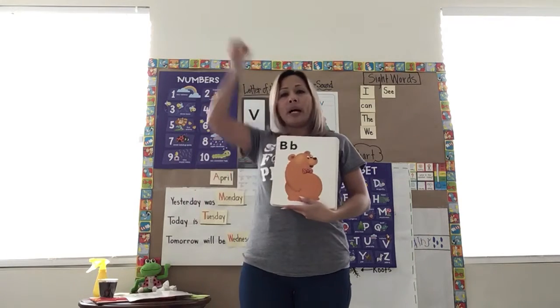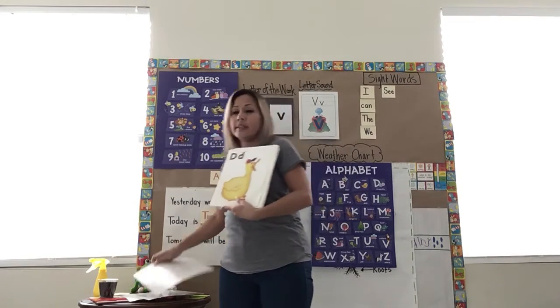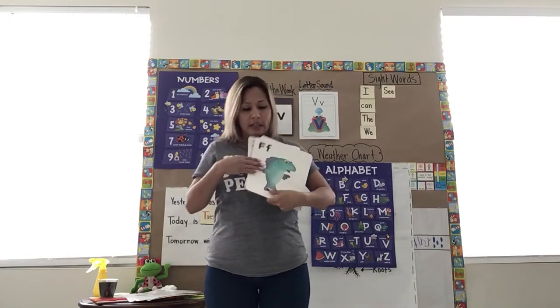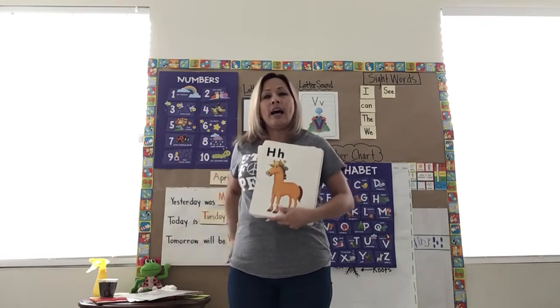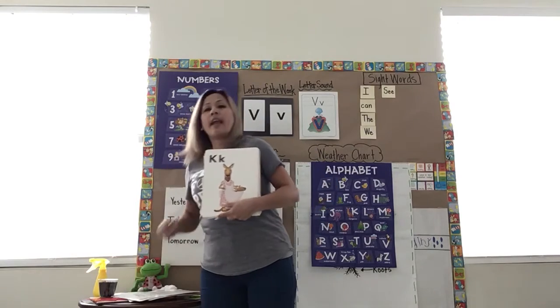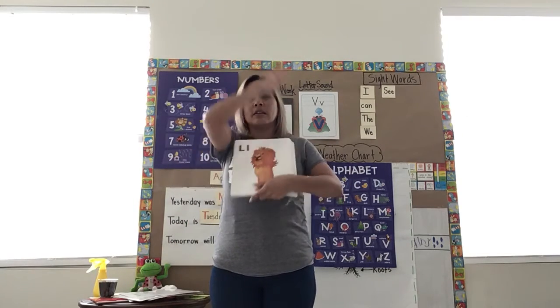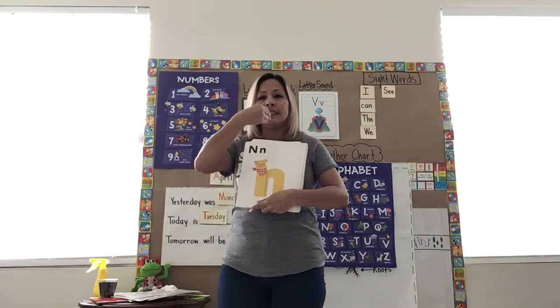Who let the B out? B, B, B. Who let the C out? C, C, C. Who let the D out? D, D, D. Who let the E out? Eh, eh, eh. Who let the F out? F, F, F. Who let the G out? G, G, G. Who let the H out? H, H, H. Who let the I out? I, I, I. Who let the J out? Ch, ch, ch. Who let the K out? K, K, K. Who let the L out? Ooh, ooh, ooh. Who let the M out? M, M, M. Who let the N out? N, N, N.